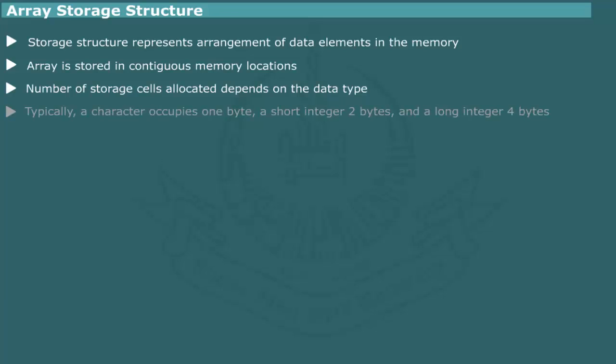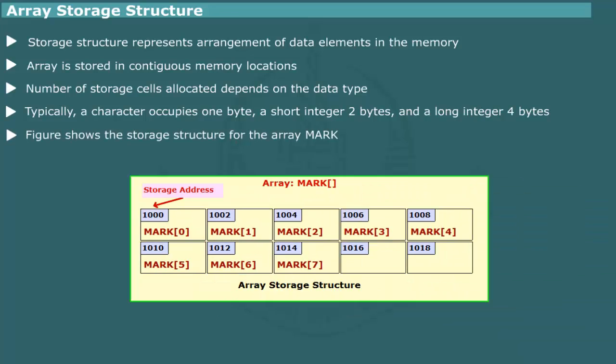Typically, a character occupies 1 byte, a short integer 2 bytes and long integer 4 bytes. Figure shows the storage structure for an array mark consisting of short integers. In this storage map, the first element is stored at location 1000, second element at location 1002 and so forth. The numbers 1000, 1002 up to 1014 are referred to as storage addresses.